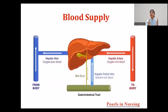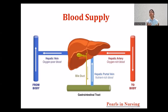Every organ inside the body has its blood supply through arteries, carrying oxygen-rich and nutrition-rich blood, and then drains into the veins. But there is something special about the liver — it has a dual blood supply. The hepatic artery provides oxygen to the liver, and the portal vein provides nutrition to the liver.